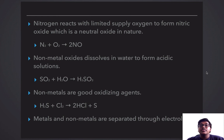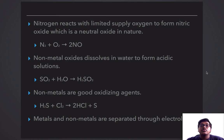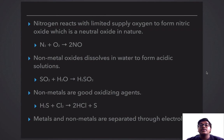SO2 is neutral in nature. The equation for nitrogen is: N2 + O2 = 2NO. When Non-Metal oxides are dissolved in water, they form an acidic solution. For example, when SO2 is dissolved in water, H2SO3 is formed. Non-Metals are very good oxidizing agents — for example, when H2S reacts with chlorine, HCl and sulfur are released. Metals and Non-Metals can also be separated through electrolysis.